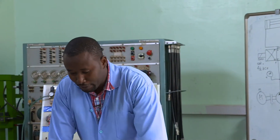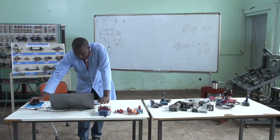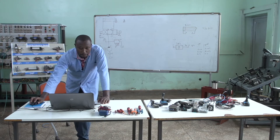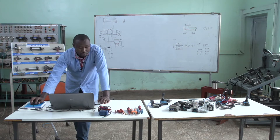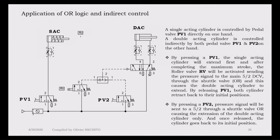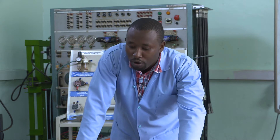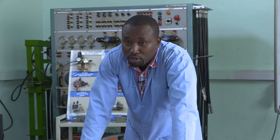This time I'm going to explain it here on my PowerPoint. I have the pressure source, then I have a service unit, and I have two pedals, such that PV one will control the single acting cylinder, which is direct control. And PV two will control a double acting cylinder, but indirectly, which is indirect control, through OR logic and a 5/2 position DCV.